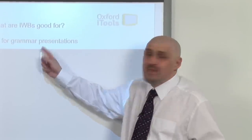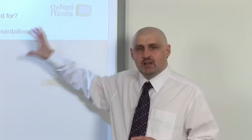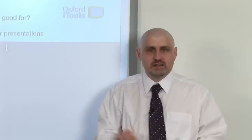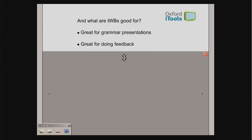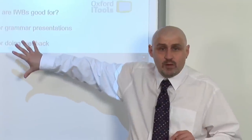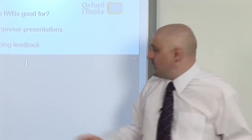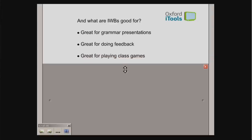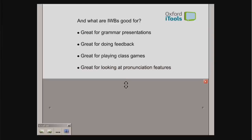So what are interactive whiteboards particularly good for? They're great for grammar presentations — you can get a clear model on the whiteboard for students to write down. They're great for feedback — revealing answers stage by stage or getting students to come and write answers on the board. They're great for playing class games, which really come alive on the whiteboard. And finally, they're great for pronunciation features — marking word stress, sentence stress, intonation, and connected speech so students can see the features on the board.